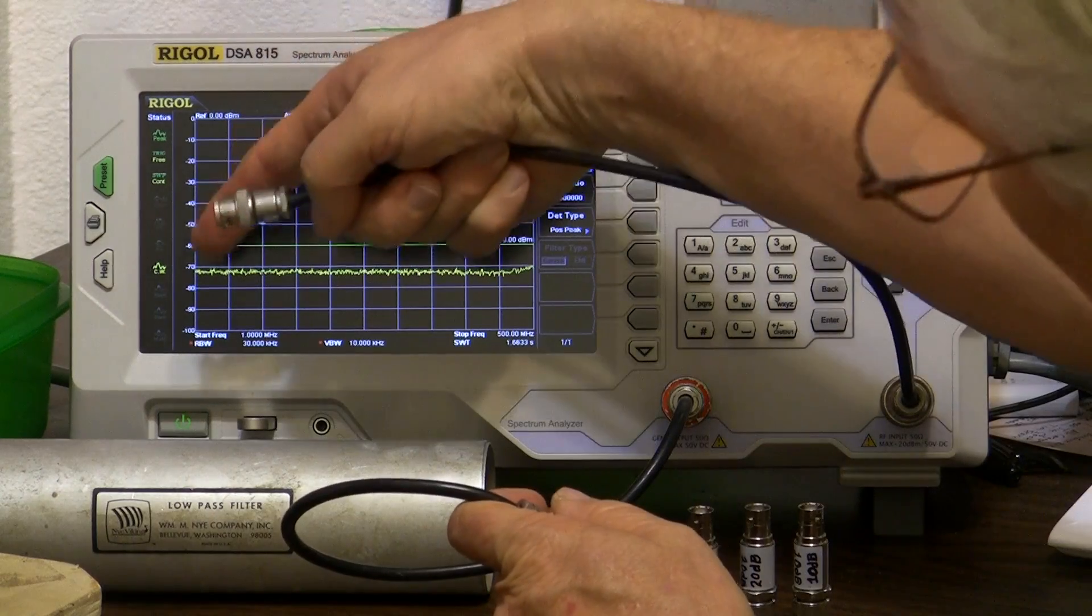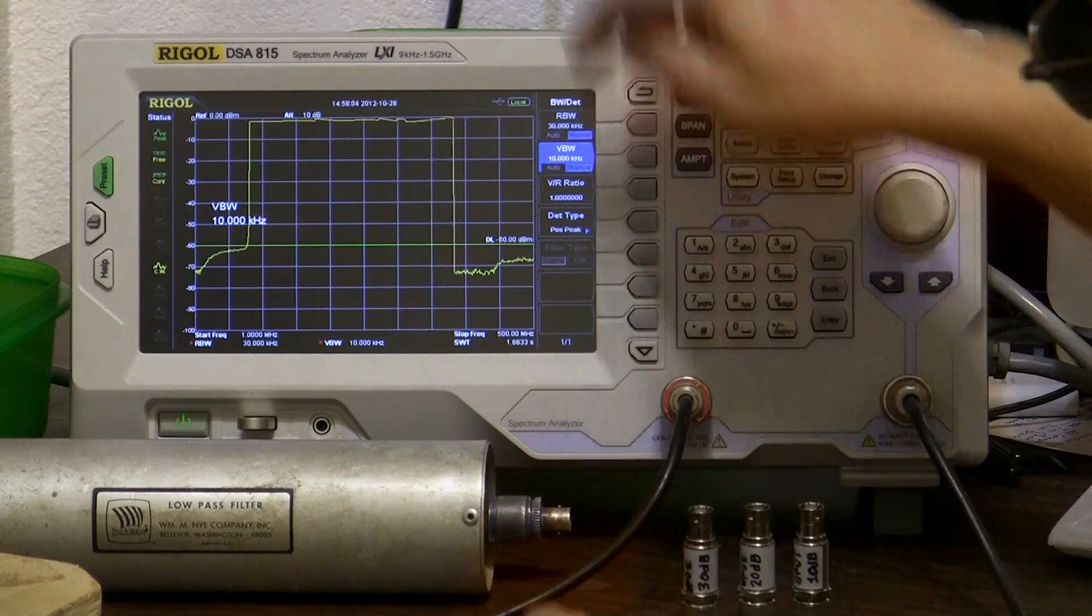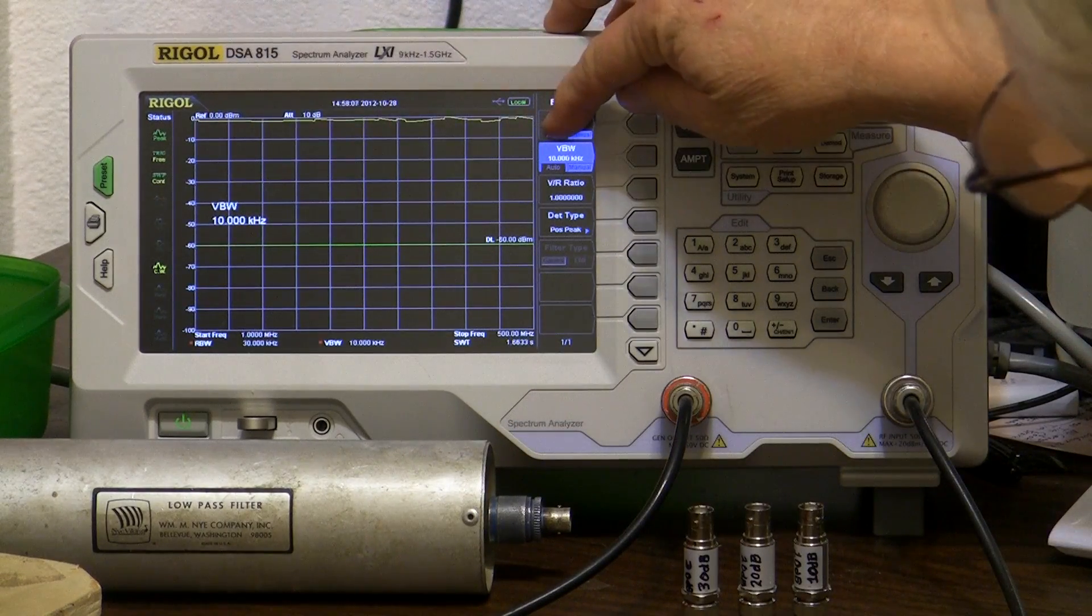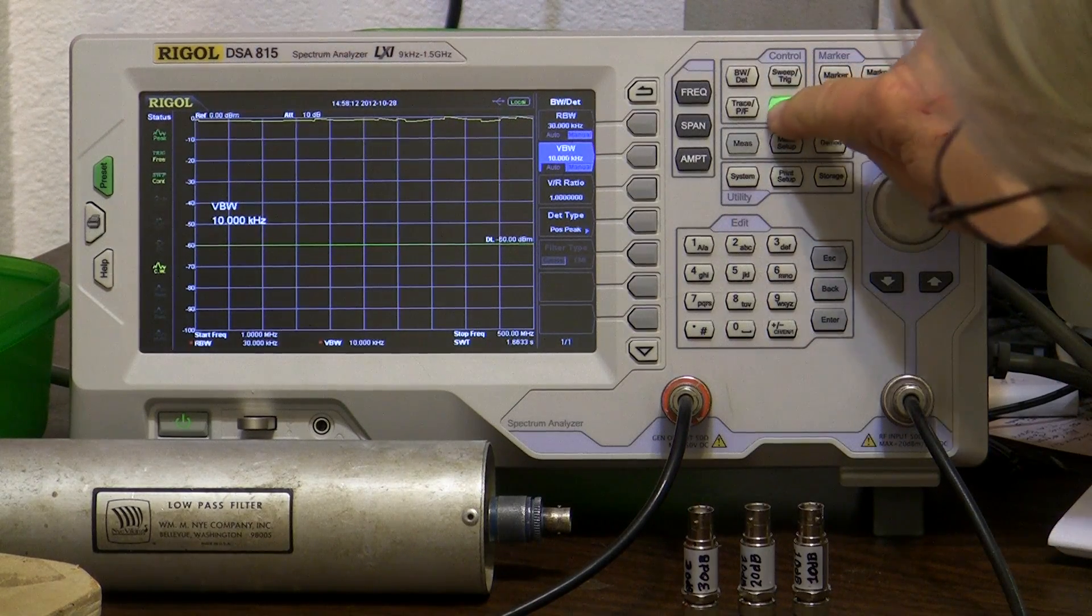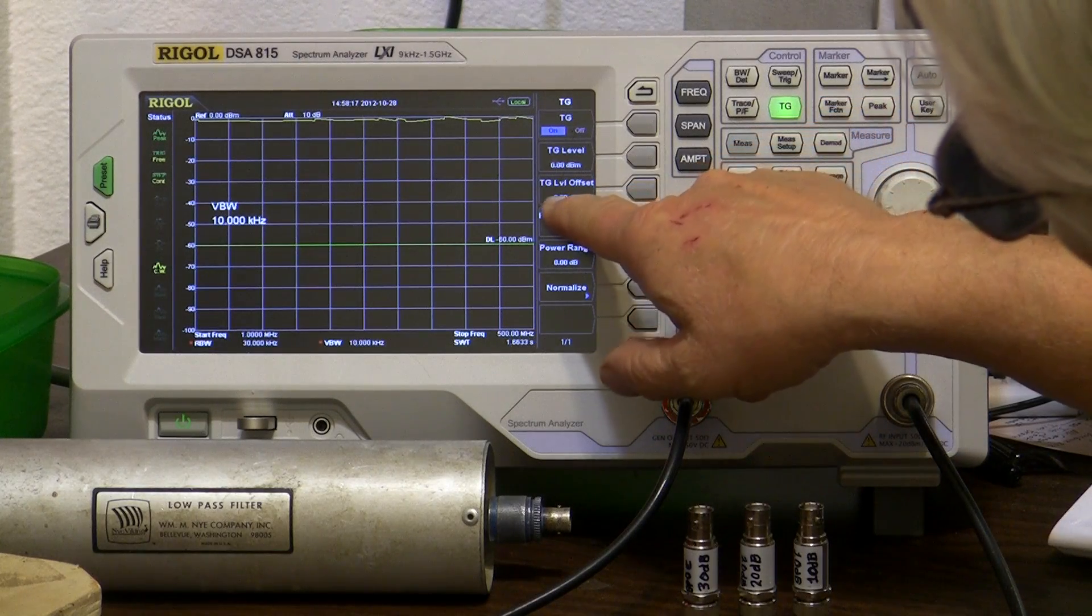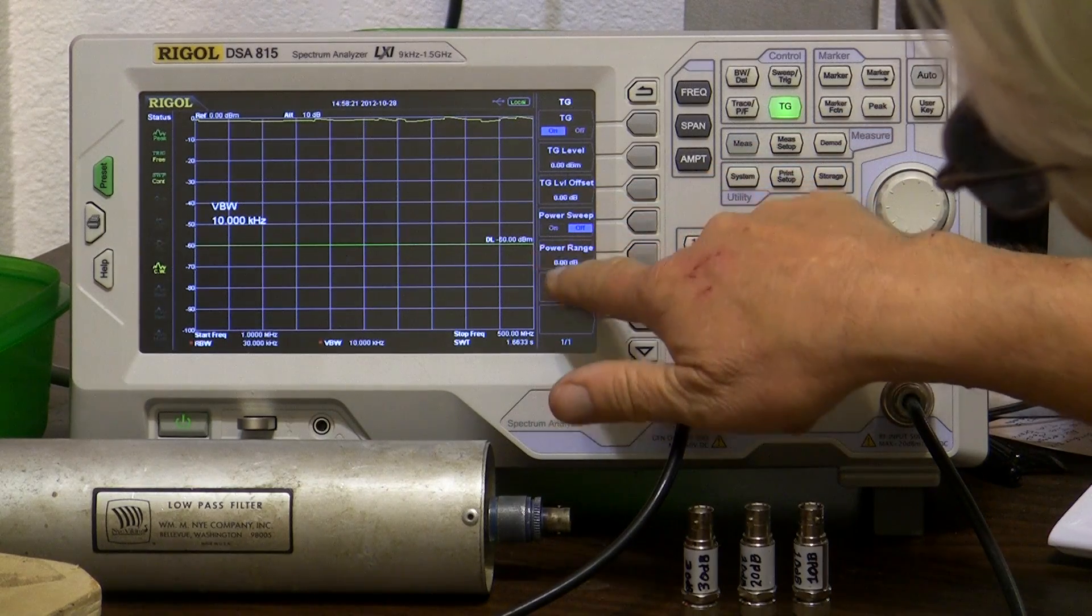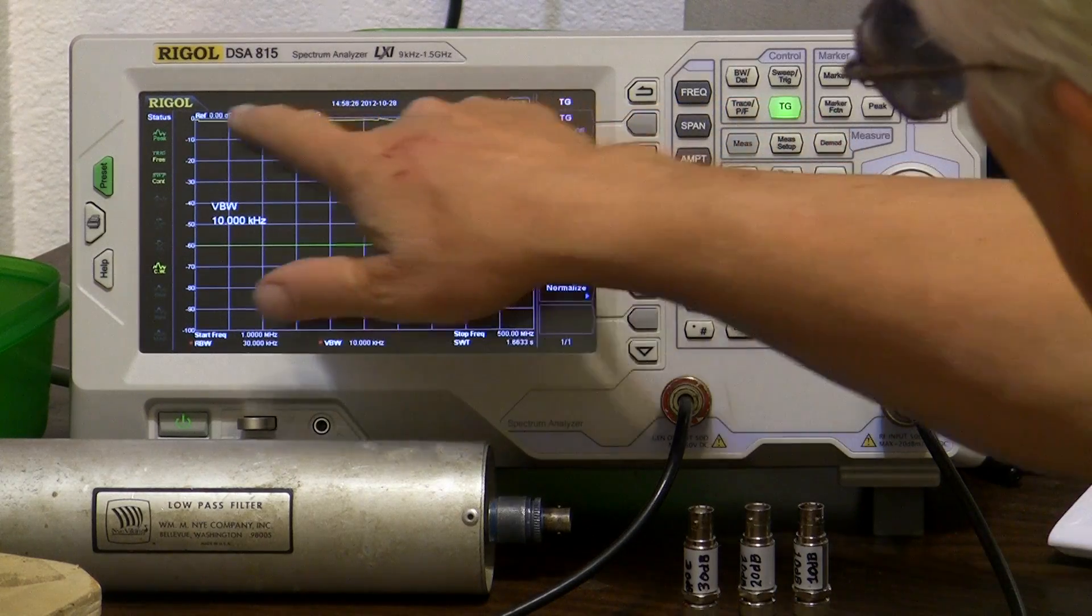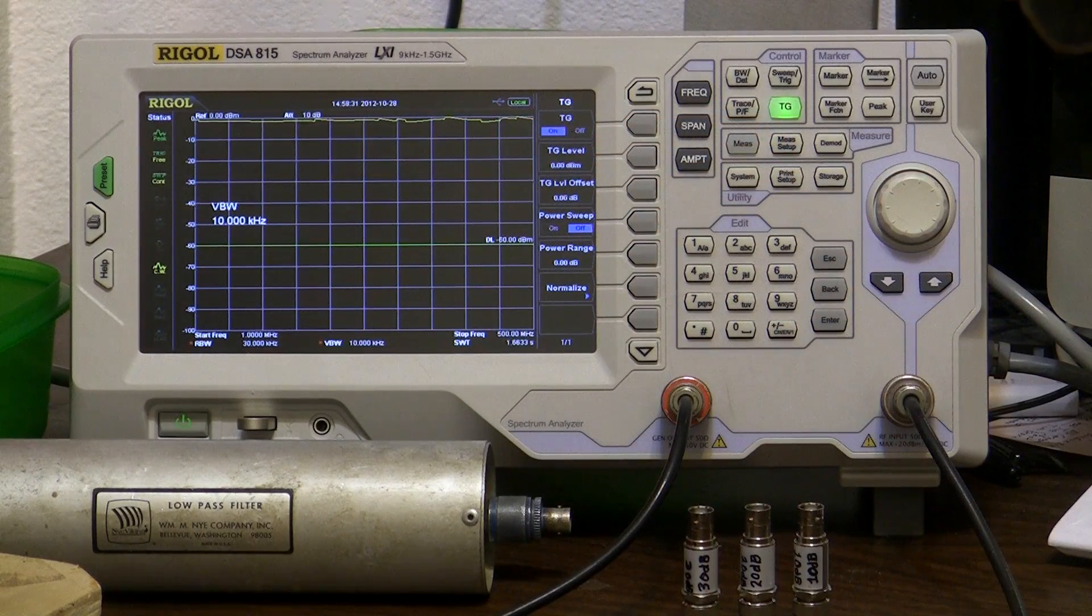Once again we're sweeping from 1 to 500 megahertz. We don't have any problem here. We're scanning just below the zero dB line here with the tracking generator. We'll press this set to zero offset for the tracking generator level, and the level is zero dBm.